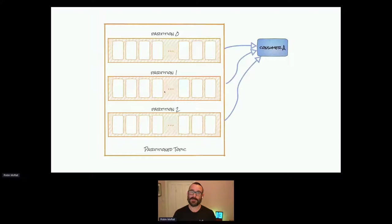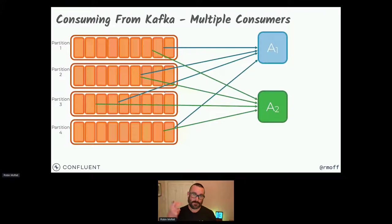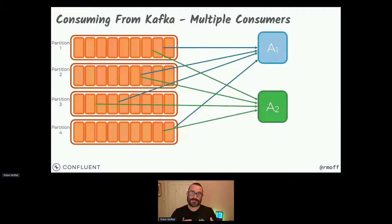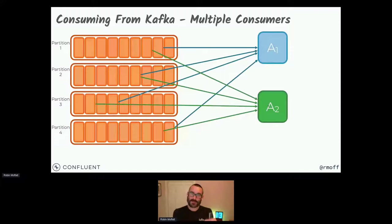You can have a single consuming application reading all data from the topic, but you can also have a second application — consumer A and consumer B — each getting a full set of data, assuming they start at the same offset. One might be fulfilment, one fraud checking, both needing all the data. But if application A1 can't keep up with throughput — writing messages into the topic quicker than the fulfilment service can process them — perhaps it's doing complex processing and can't keep up even after scaling the box and optimizing the code. We need to process this data in parallel.